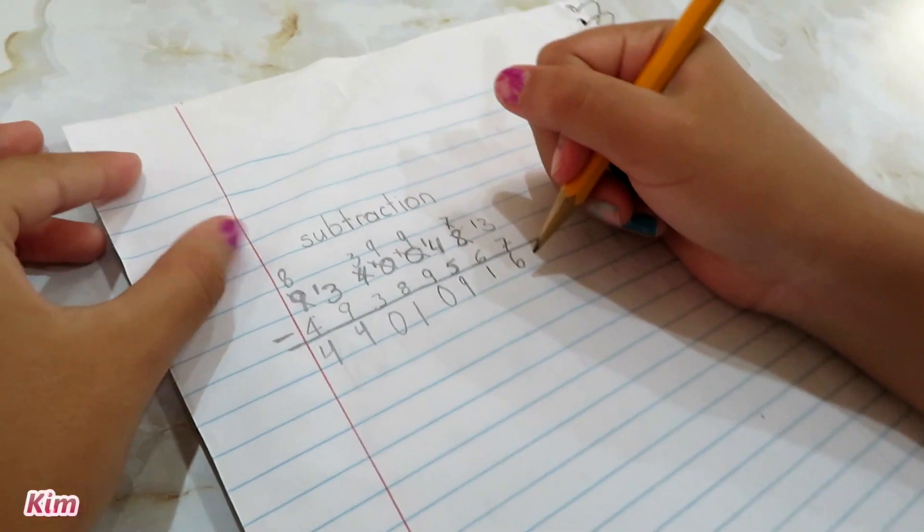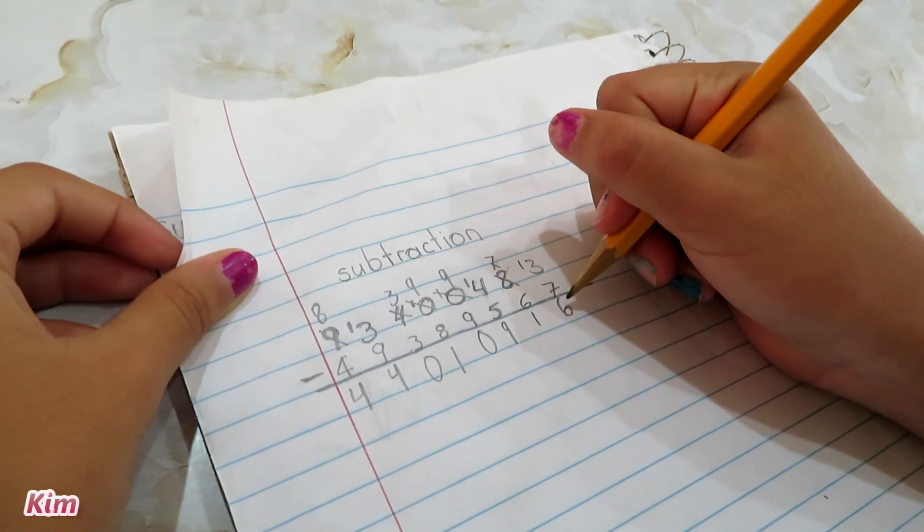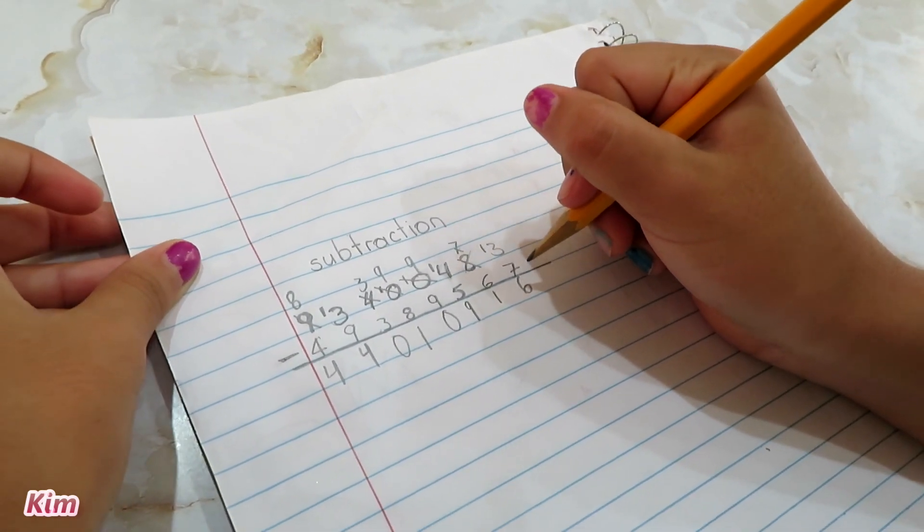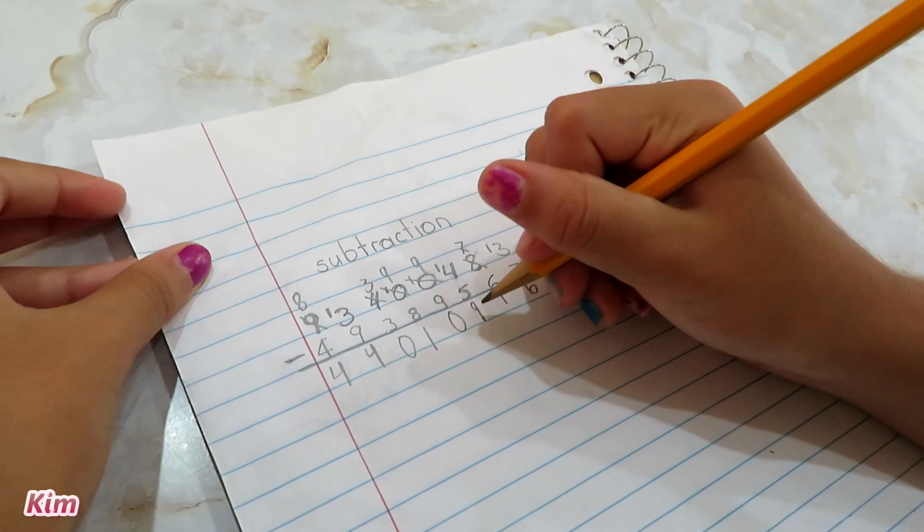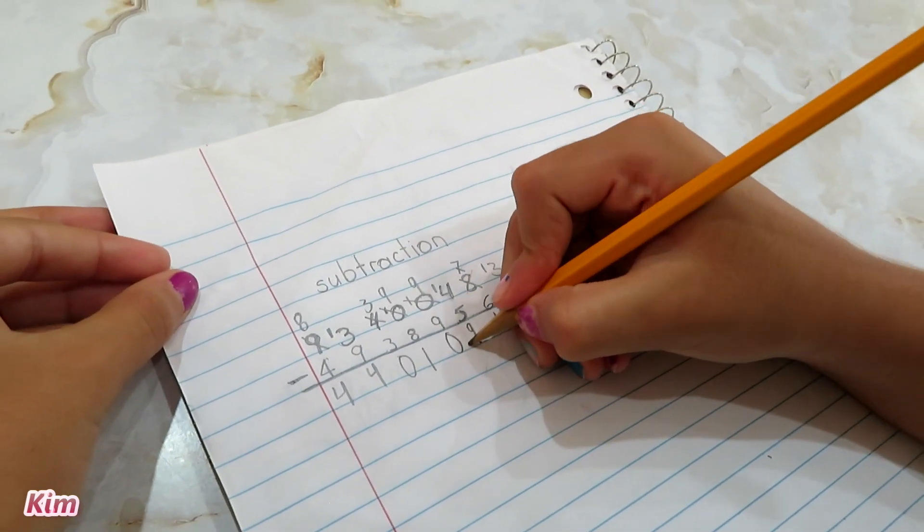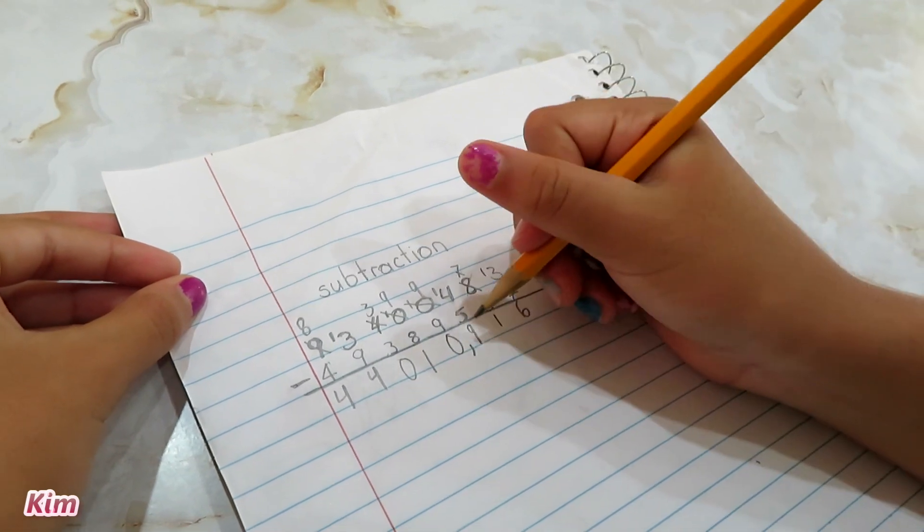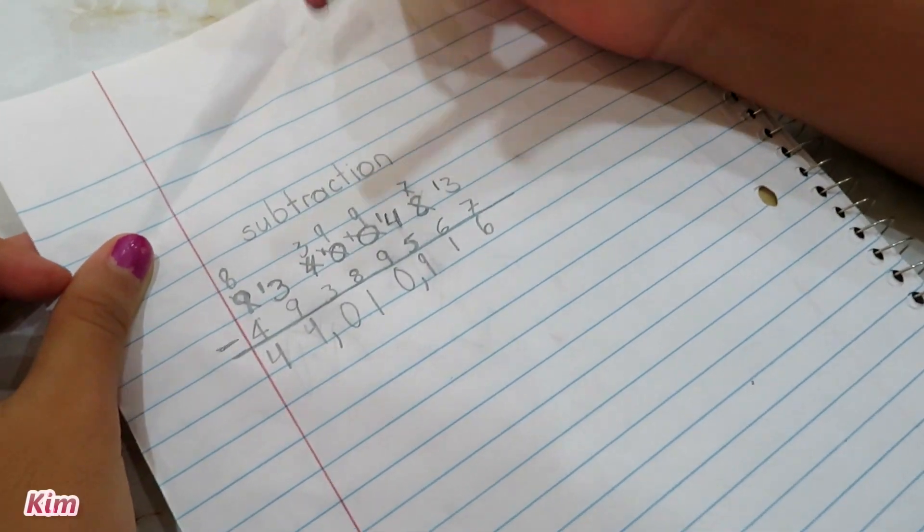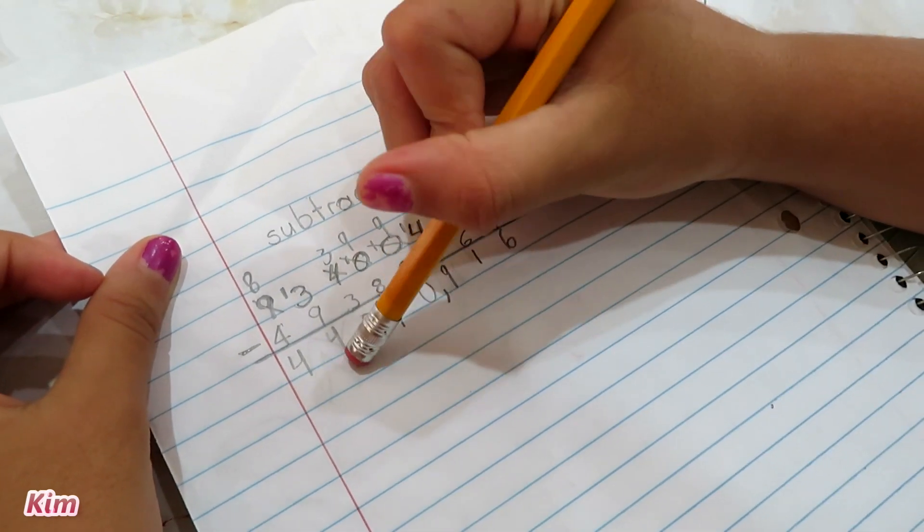Now we put the commas. We have to put them after the 3 numbers. So we count. 1, 2, 3. We put it here. Then we count again. 1, 2, 3. We put it here. This is thousands and this is millions.